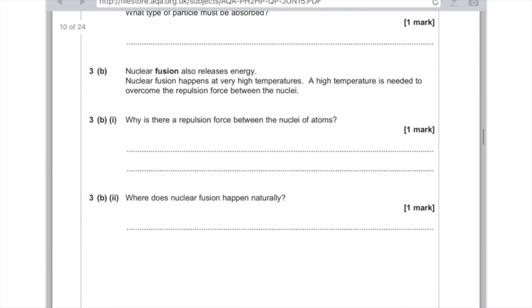Question 3b, nuclear fusion also releases energy. Nuclear fusion happens at very high temperatures. A high temperature is needed to overcome the repulsion force between the nuclei. I realize there's some exam boards you don't need to know about nuclear fusion, so if you're one of those exam boards don't worry about this part of my video, but I'm just going to complete this question for argument's sake. Why is there a repulsion force between the nuclei of atoms? Remember it's because atomic nuclei are positively charged because they're full of protons and neutrons and neutrons have no charge, so fundamentally they're positively charged and therefore if you make two positive things try to collide or fuse, they're going to repel. So you just want to say here that the nuclei are positive and that cause repulsion. Where does nuclear fusion happen naturally? That is in stars.